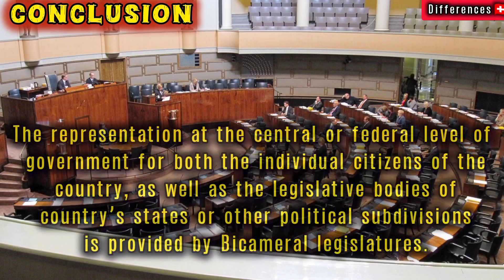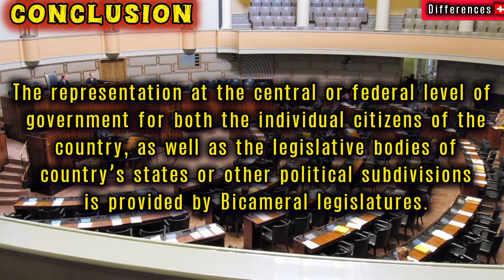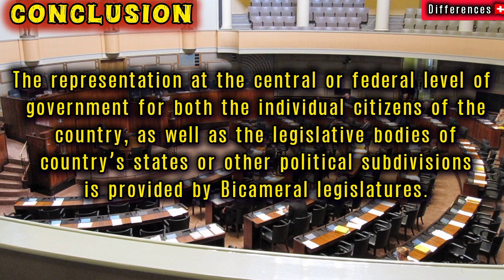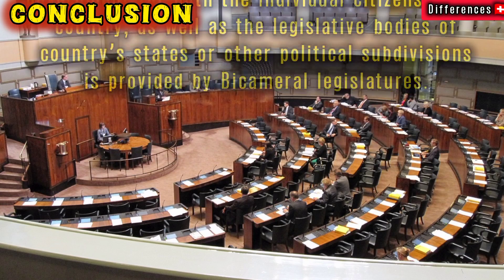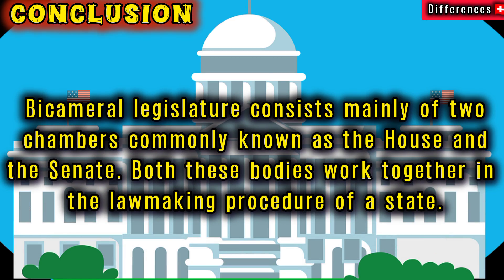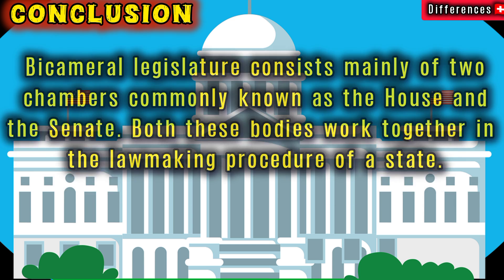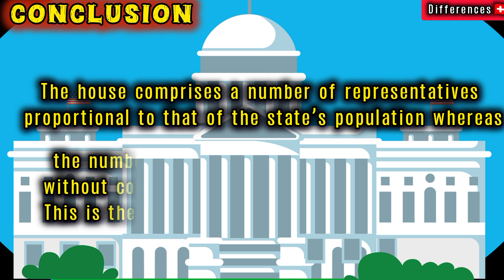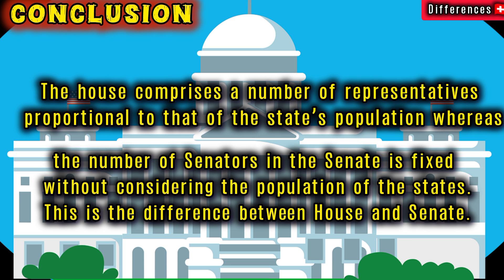In conclusion, bicameral legislatures provide representation at the federal level for both individual citizens and the legislative bodies of states or other political subdivisions. Bicameral legislatures consist mainly of two chambers — the House and the Senate — which work together in the lawmaking procedure. The House comprises a number of representatives proportional to the state's population, whereas the number of senators in the Senate is fixed regardless of population.